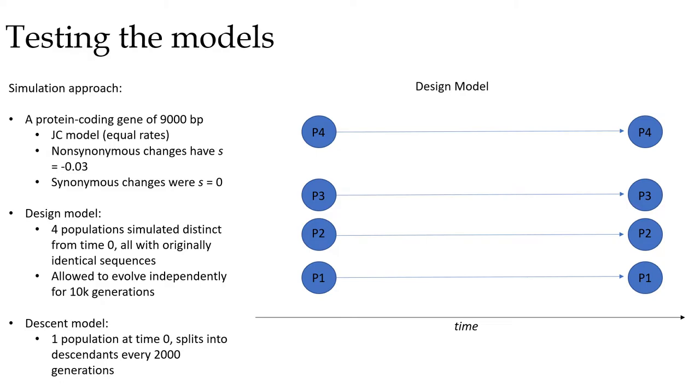I used a Jukes-Cantor model where we assume equal rates of transitions between any possible base pair. Non-synonymous changes, so these are changes that actually change the amino acid, have a selection coefficient of negative 0.03. This is a pretty high selection coefficient. So these are very deleterious. And then we have synonymous changes with a selection coefficient of zero. Now importantly, these non-synonymous changes, this is a mean of negative 0.03. This is actually a beta distribution, so that you can have some that are lower, some that are higher. There is a distribution of possible values that are being drawn just as kind of an aside there. If you're interested in that, we can chat about it more in the comment section.